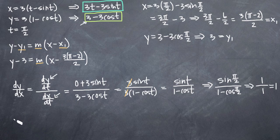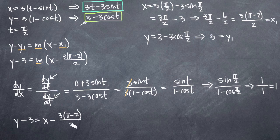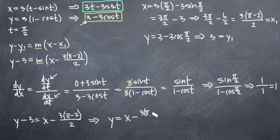Plugging 1 in for m, we get y minus 3 equals x minus 3 times (pi minus 2) all over 2. We can leave our equation in this form, but since we're so close to slope-intercept form, let's move the 3 to the right-hand side: y equals x minus 3 times (pi minus 2) all over 2, plus 3.